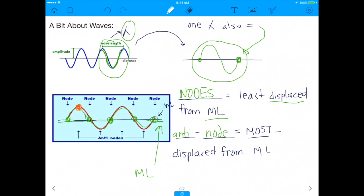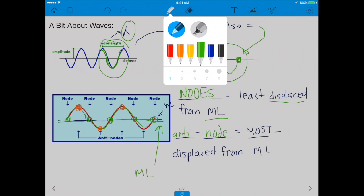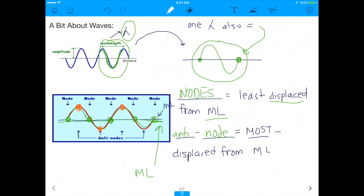So, this right here at the top is an anti-node. This is an anti-node. This is an anti-node. Anti-nodes are the most displaced from the middle line, alright? That's the point. So, now that we know what nodes and anti-nodes are, I want to show you the golden rule I use to follow and answer every single pipe problem.